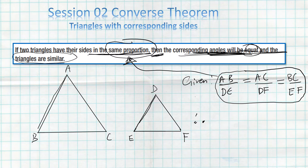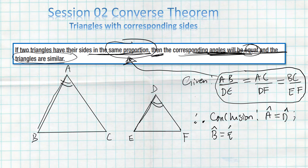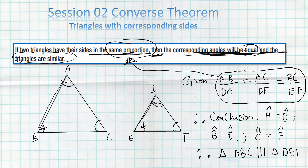From that given proportionality, we can conclude that angle A equals angle D, angle B equals angle E, and angle C equals angle F. We can therefore also conclude that triangle ABC is similar to triangle DEF. If two triangles have corresponding sides in the same proportion, their corresponding angles will be equal and the two triangles are similar.